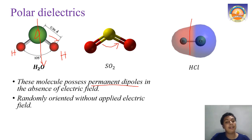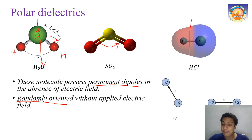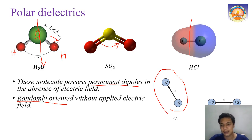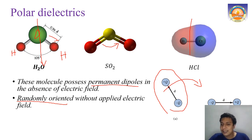Even though polar molecules have permanent dipole moments, in the absence of an electric field these dipoles are randomly oriented throughout the material, so the net dipole moment is zero. When an electric field is applied, a torque acts on each dipole and they align in the direction of the electric field.